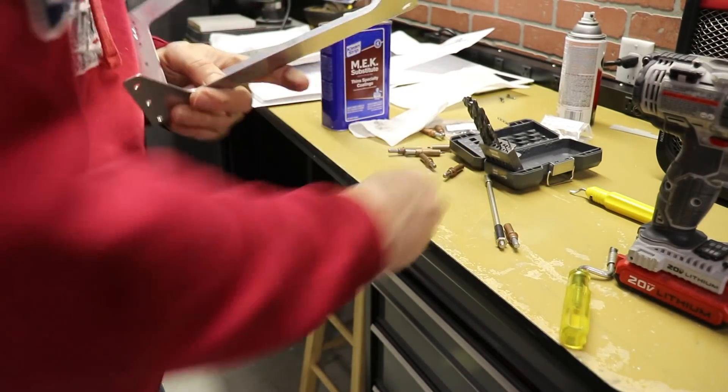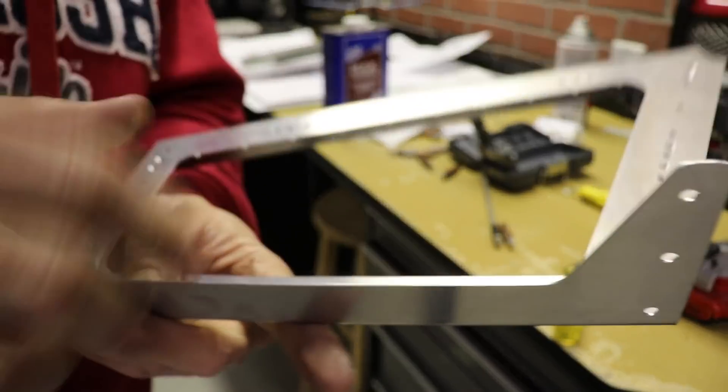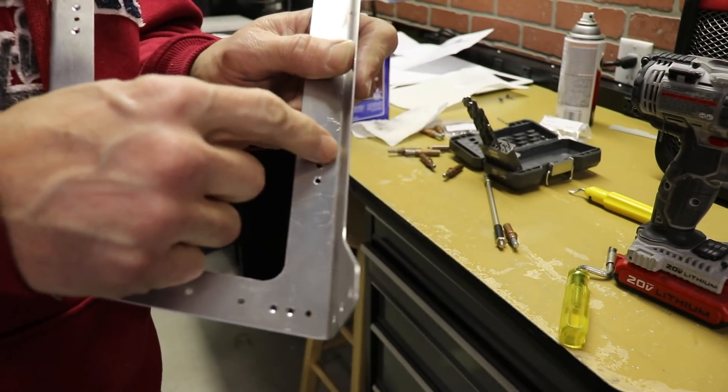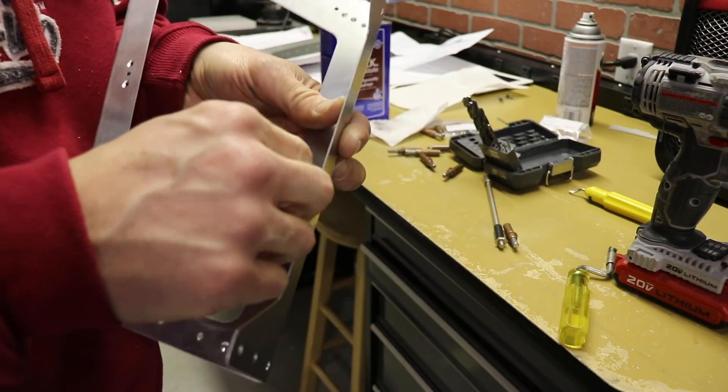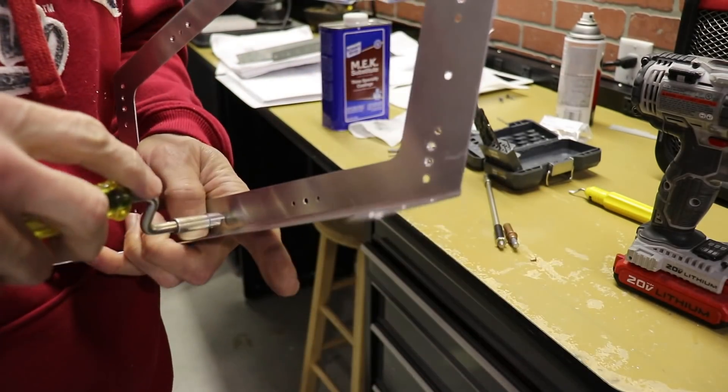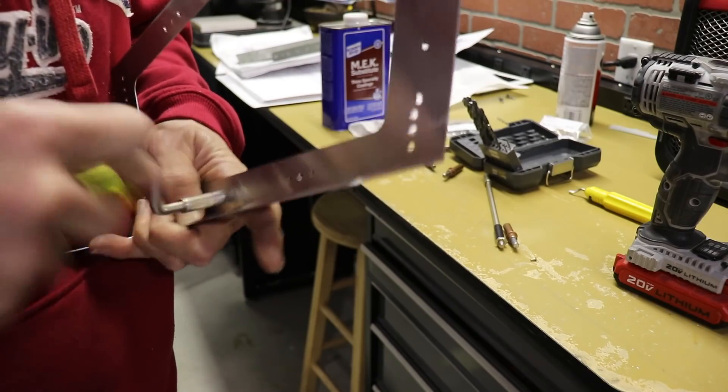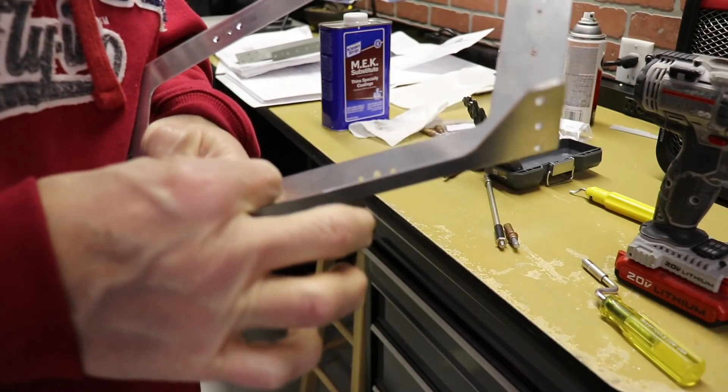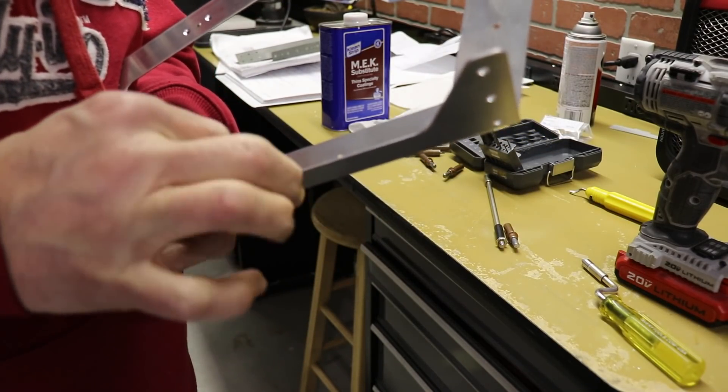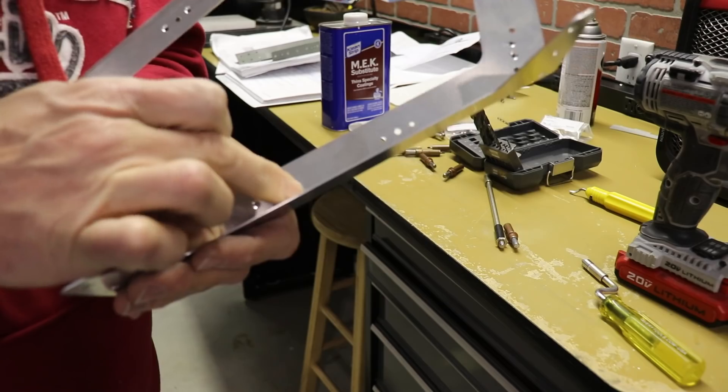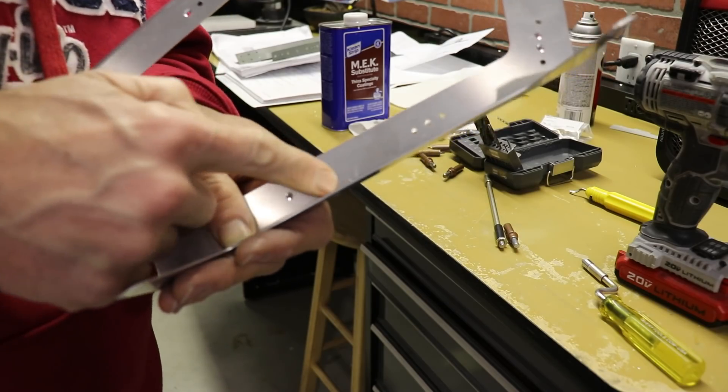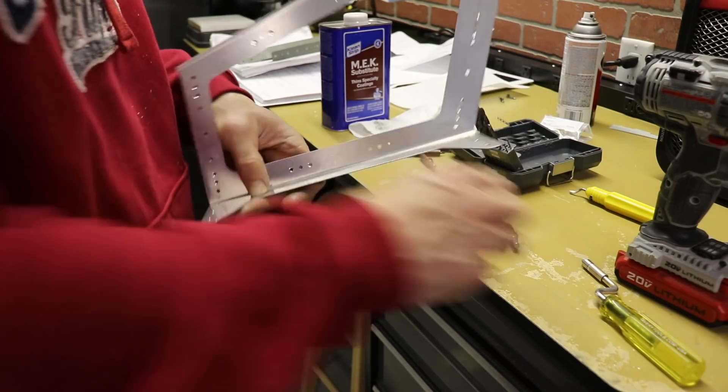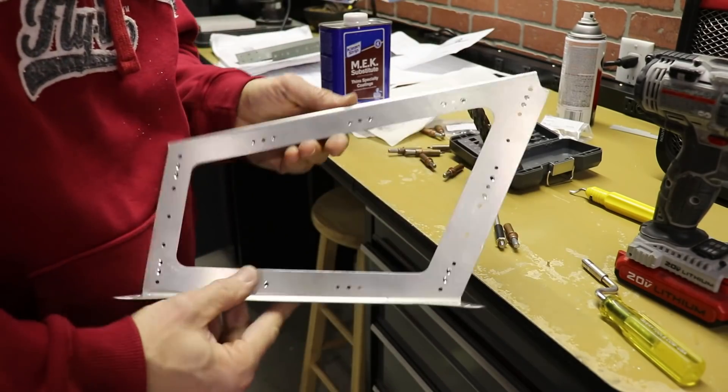And then you just spin it about 18,000 times and you'll get a perfect countersink. And then I always test it with the rivet to make sure the rivet sits flat in there. On this one here, it looks like I might have to go just a tad bit more. I don't want to go too deep, but I don't want that rivet sticking out either. There, that's about perfect now. So that's what I'll do for all four of these holes on the bottom. Then this piece will be done and ready for primer.